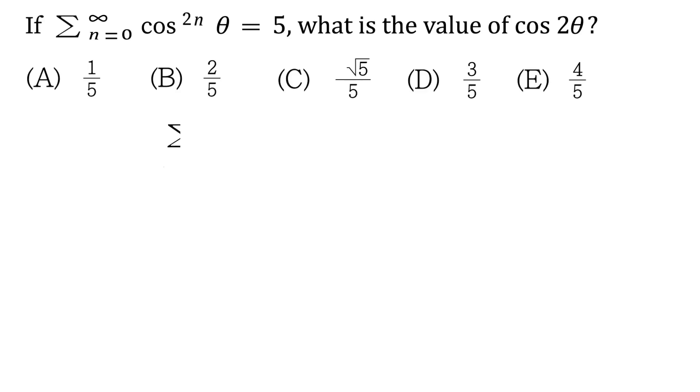So we have the sum from n equals 0 to infinity of the cos of theta all to the power of 2n is equal to 5. So let's first write this out and see what it looks like. Cos theta to the power of 0 plus cos theta to the power of 2. When n is 1, this will be 2.